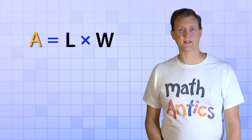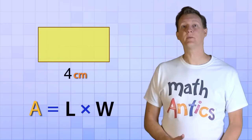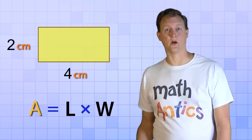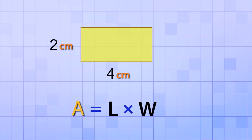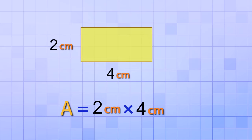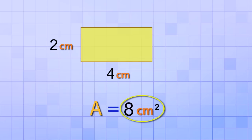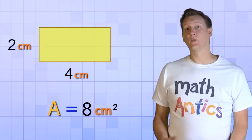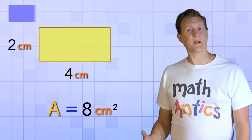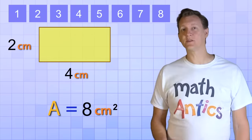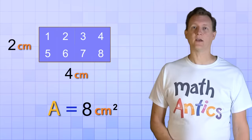Our formula, area equals length times width, worked for our square. Now let's see if it works for a rectangle. Here's a rectangle that's 4 centimeters wide and 2 centimeters long. We plug the length and width into our formula — 2 centimeters and 4 centimeters — then multiply. 2 times 4 equals 8, and centimeter times centimeter is centimeters squared. So the area of this rectangle is 8 centimeters squared. We can verify this because exactly 8 square centimeters fit inside this rectangle.